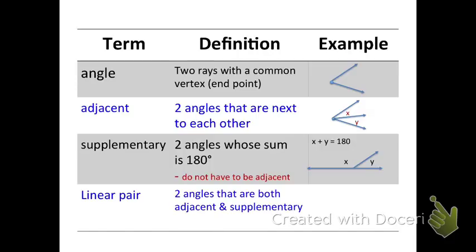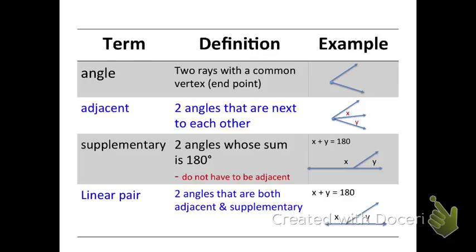The last definition that we're going to talk about today is linear pair. Linear pair are two angles that are both adjacent and supplementary. So linear pairs have to be adjacent, meaning next to each other, and supplementary, meaning they add up to 180 degrees. When they're supplementary, the equation that we're going to use is X plus Y equals 180, just like we did with supplementary. Then the image that I'm going to use is actually the same image as above, where it's a straight line horizontal line and then a ray coming out at an angle. The straight horizontal line that is creating two angles is 180 degrees, so that would be a linear pair.